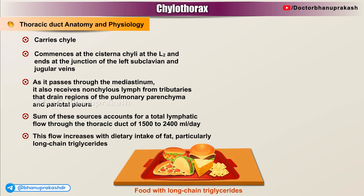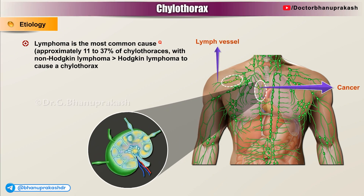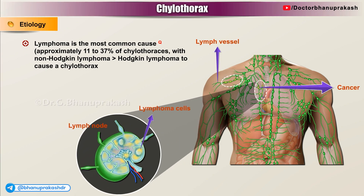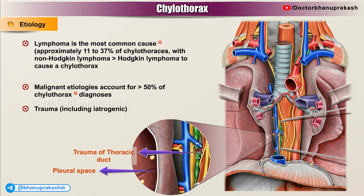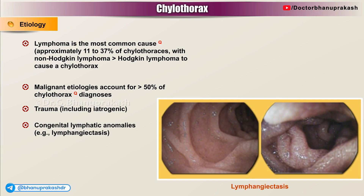This flow increases with dietary intake of fat, particularly long-chain triglycerides. Etiology: Lymphoma is the most common cause, accounting for approximately 11 to 37 percent of chylothoraces, with non-Hodgkin lymphoma more likely than Hodgkin's lymphoma to cause a chylothorax. Malignant etiologies account for more than 50 percent of chylothorax diagnoses. Other causes include trauma including iatrogenic, and congenital lymphatic anomalies.